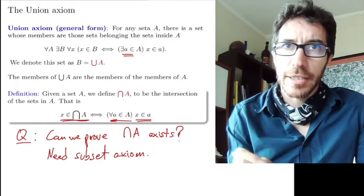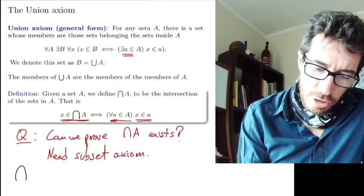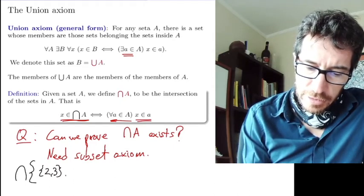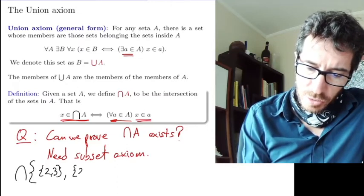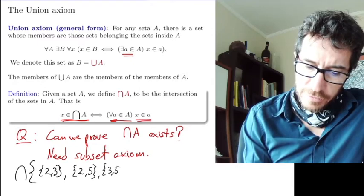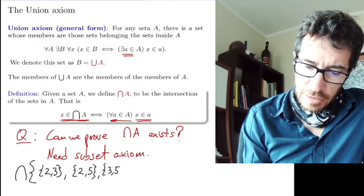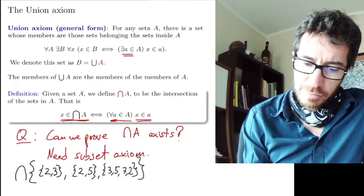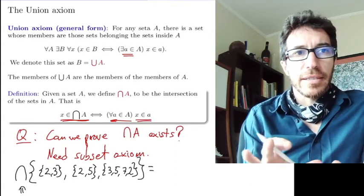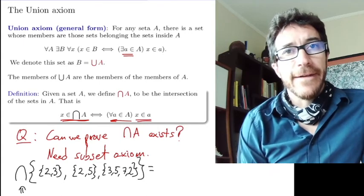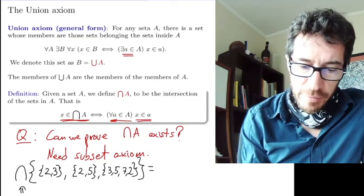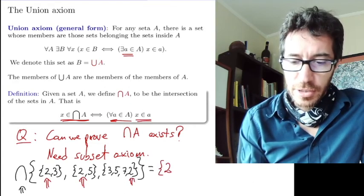Let's see a quick example to see how this intersection works. Suppose we're going to take the intersection of the set that contains the following three sets: {2,3}, {2,5}, and {3,5,7,2}. What is the intersection of these three sets together? The notation is you just put the big intersection. That means the intersection of those three sets. These are the members, the things that belong to all of them. 3 doesn't belong to all of them, 5 doesn't belong to all of them. The only one that belongs to all of them is 2. So we get that this is the set that contains only 2.